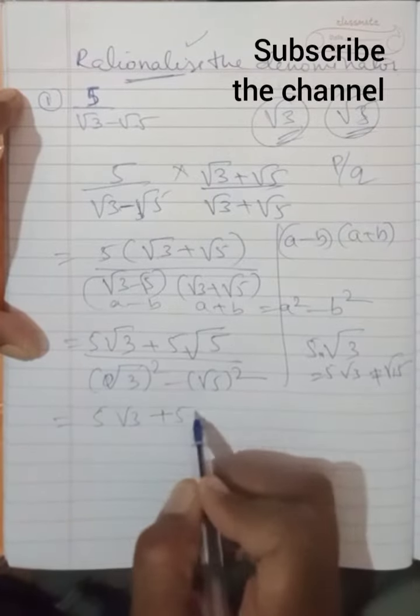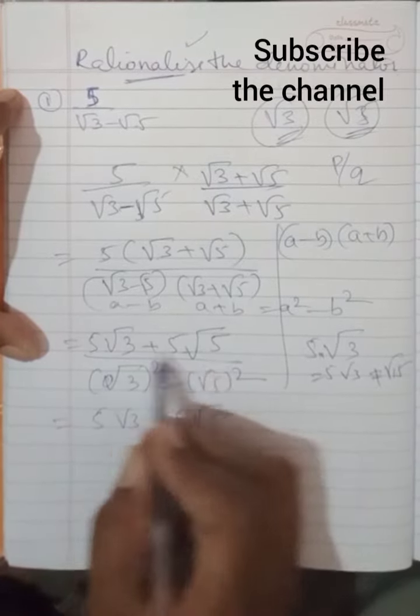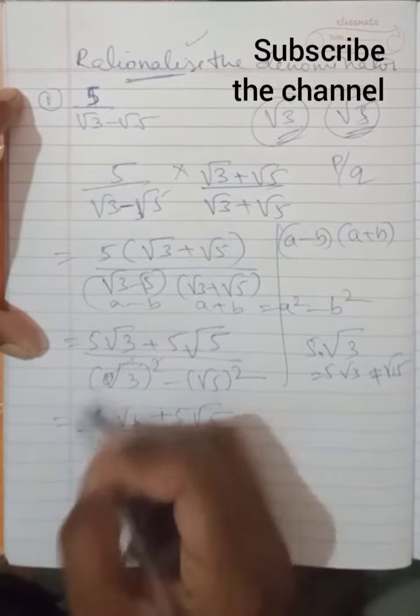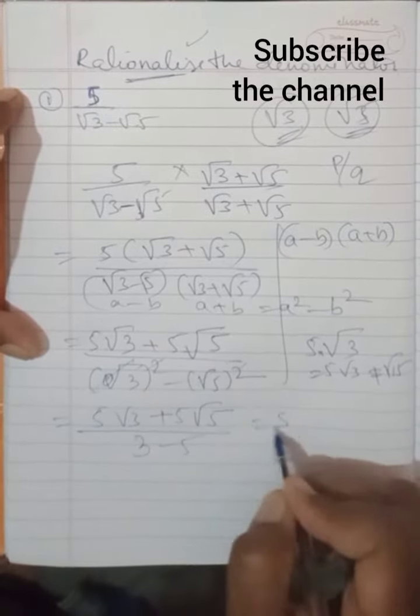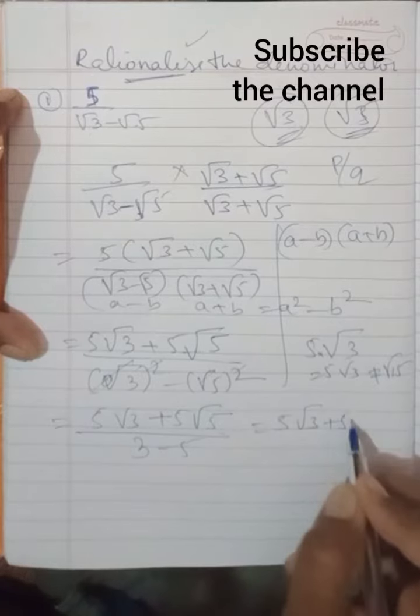Root 3, this square and this square goes, 3 minus 5 which is equal to 5 root 3 plus 5 root 5 divided by minus 2.